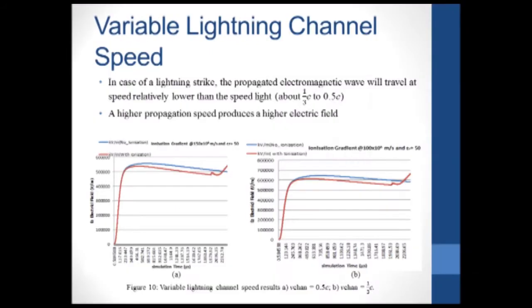In case of lightning strike, the propagated electromagnetic wave will travel at speed relatively lower than the speed of light. We've computed simulations using 33% and 50% speed of light. Our result shows that the higher propagation speed produces a higher electric field.